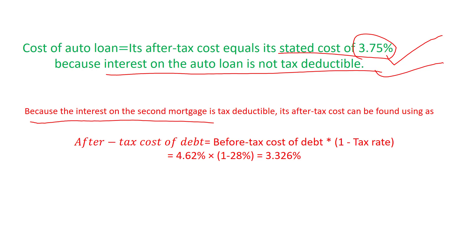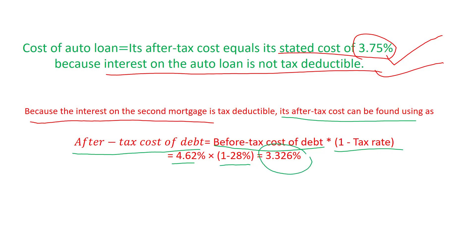The second mortgage, however, is tax-deductible. When a loan is tax-deductible, the after-tax cost of debt equals the before-tax cost of debt times one minus the tax rate. So: 4.62 percent × (1 − 0.28) = 3.326 percent. That means the after-tax cost of debt if you finance this car through a second mortgage is only 3.326 percent.